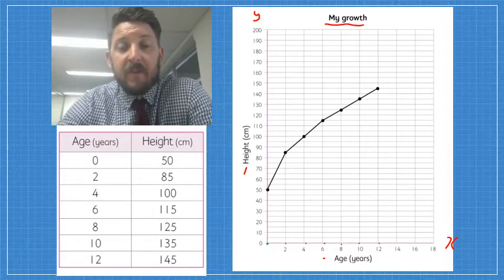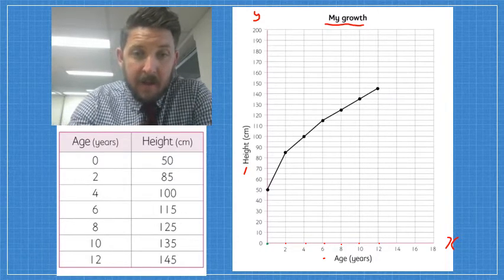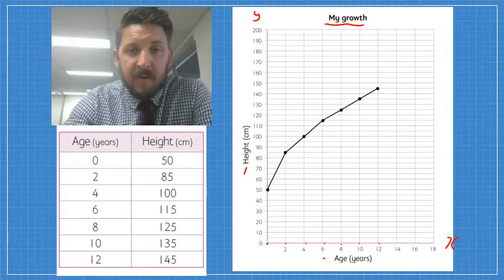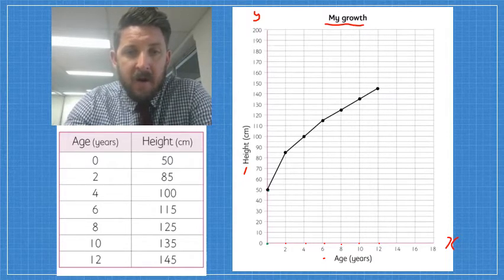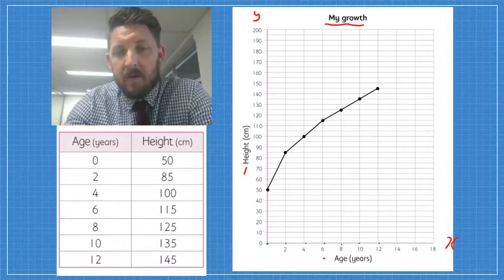We want to be plotting from our first actual measurement. So here, our first actual measurement is 50 centimetres, so we actually started up here, right next to 50 centimetres. Then we go to the next one, which was 2. We work our way up, and then we go to 85, which is between 80 and 90. We put our dot down and then join that using our ruler.